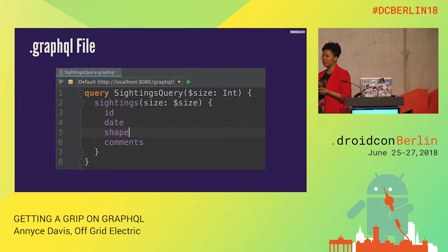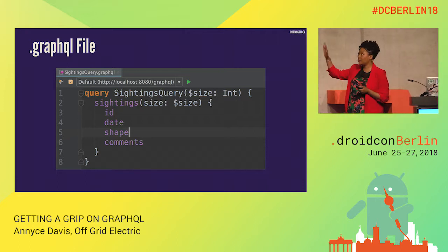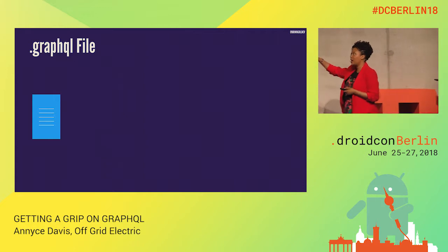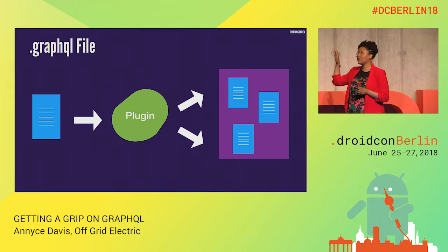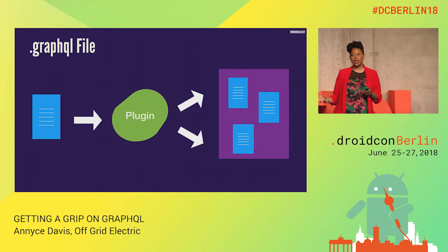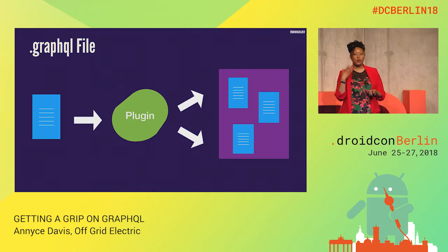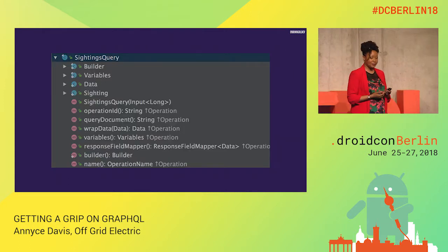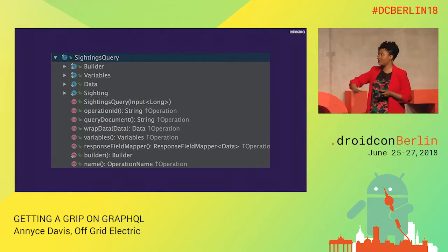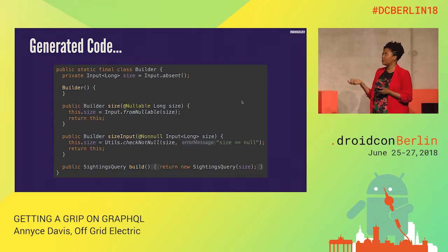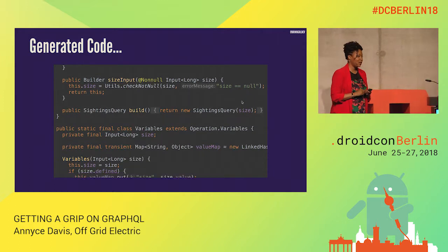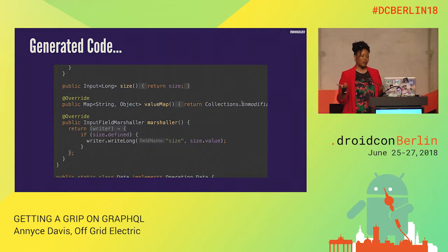The final thing you need is a .graphql file — just a regular GraphQL query. The plugin takes this file and generates a large Java class for you, with nested classes that do the heavy lifting of parsing your data, creating builders, and allowing you to interact with your GraphQL server in a simple way. Inside the generated code you can see builders, variables, and data, along with all the pieces taking your schema and doing this heavy lifting.